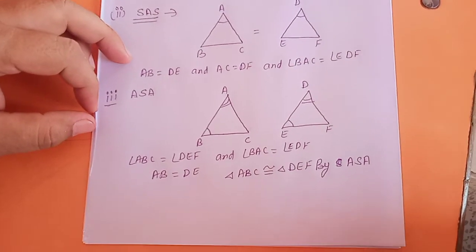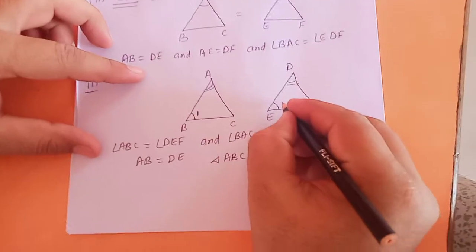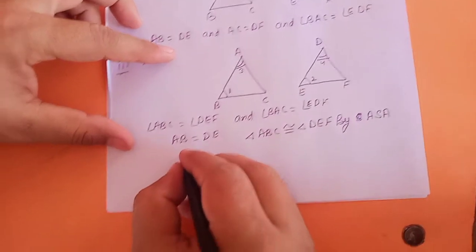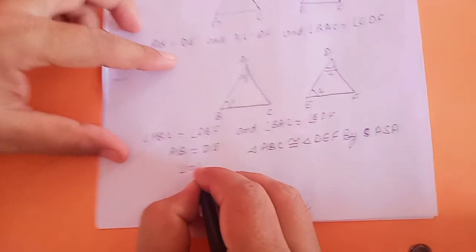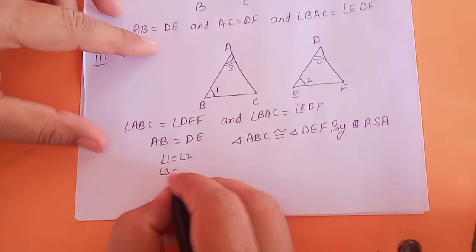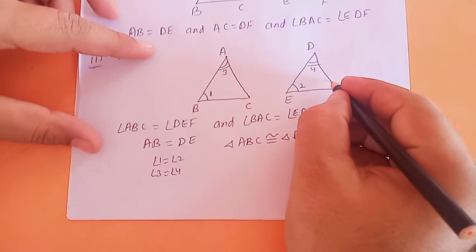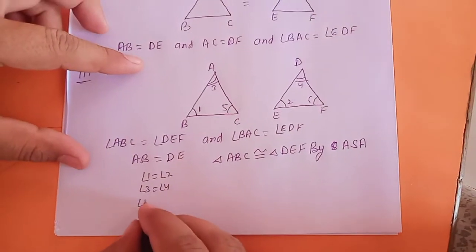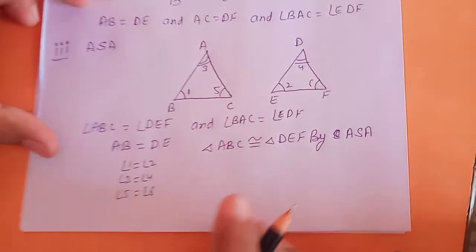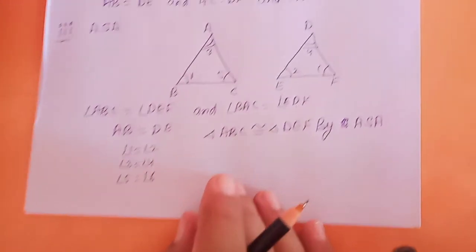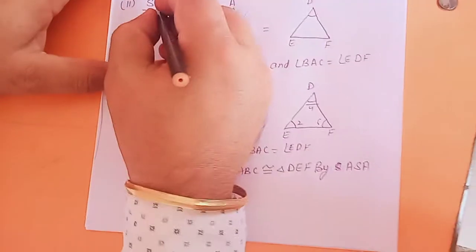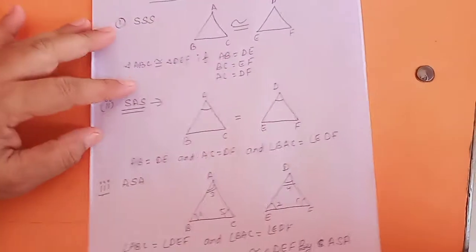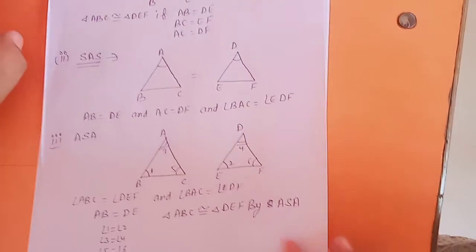As you know, if angle 1 equals angle 2 and angle 3 equals angle 4, then easily you can say angle 5 equals angle 6, because the sum of angles of a triangle is 180. So in ASA you can apply this anyway, but in SAS it is compulsory to take 2 sides and the included angle.